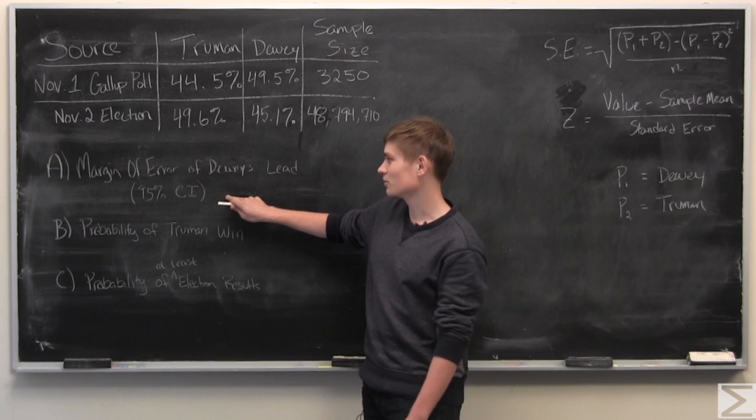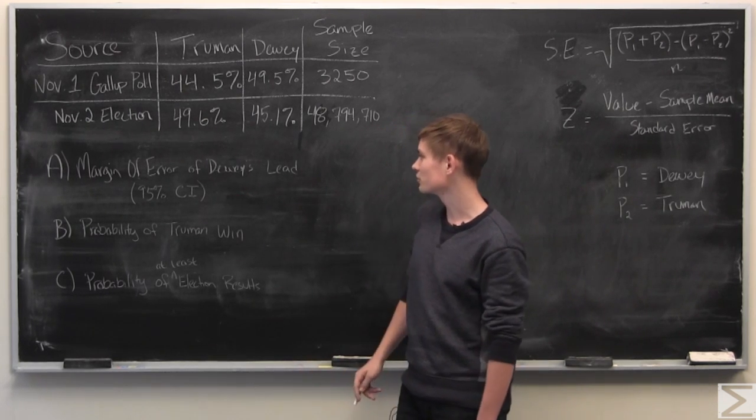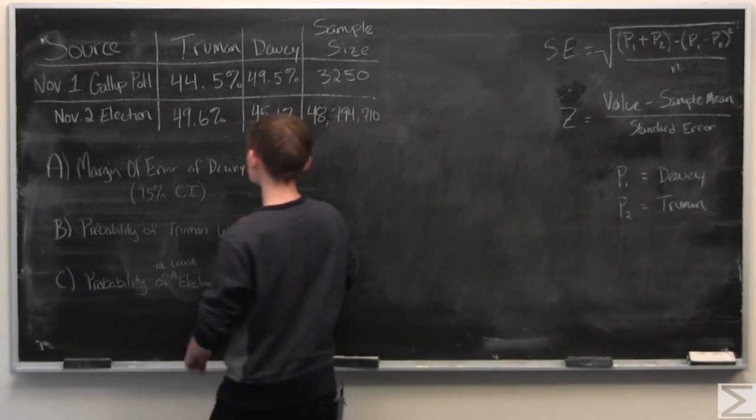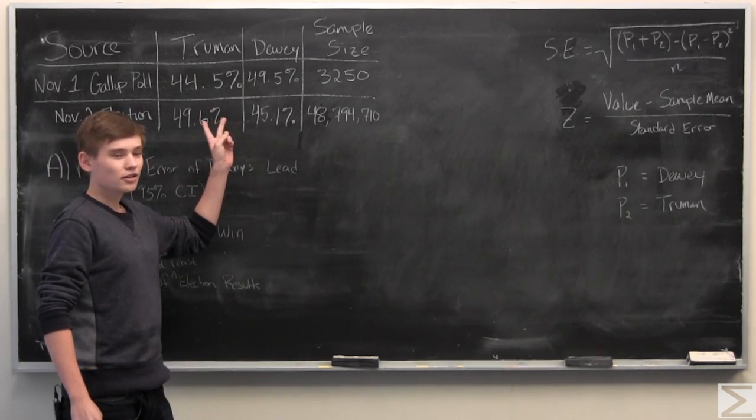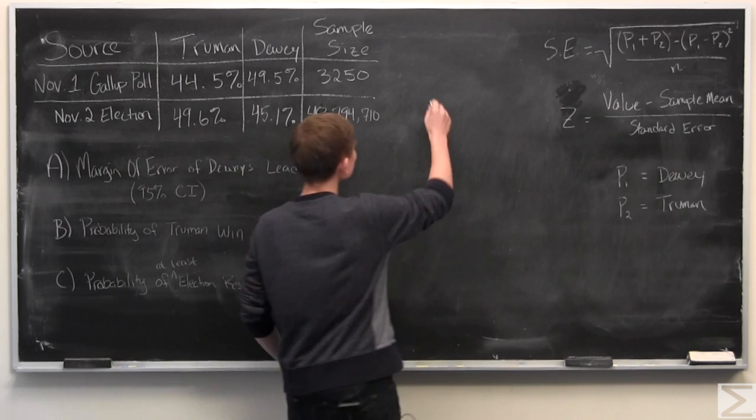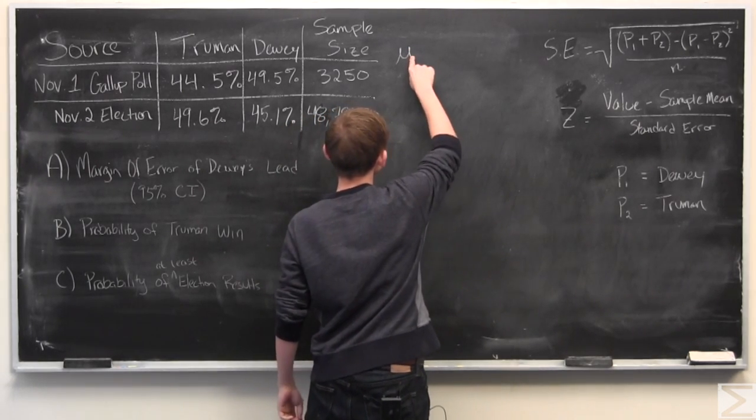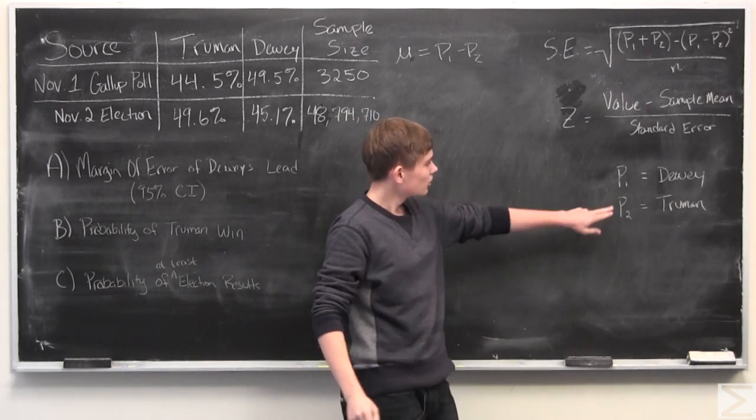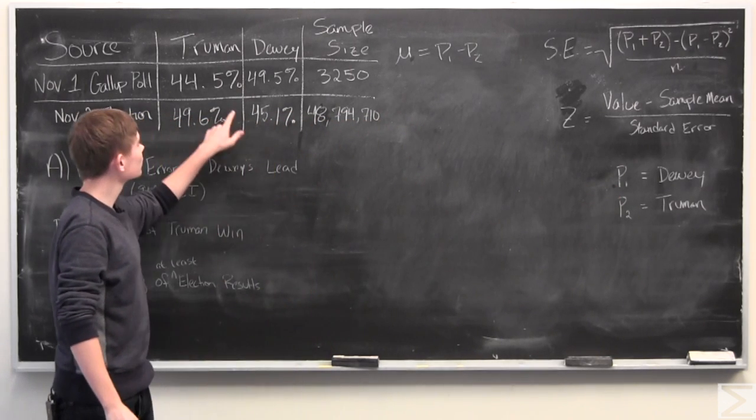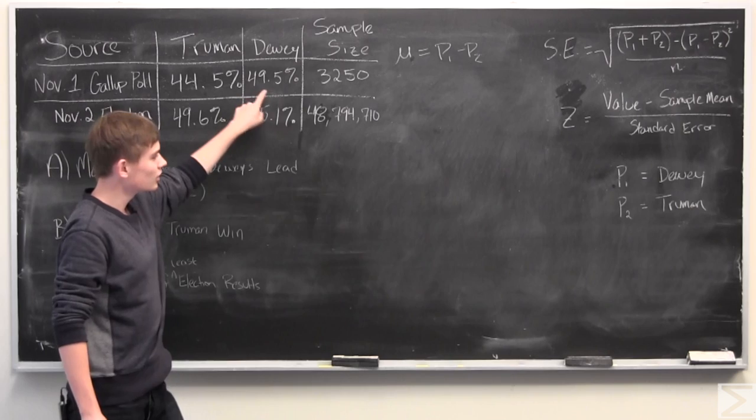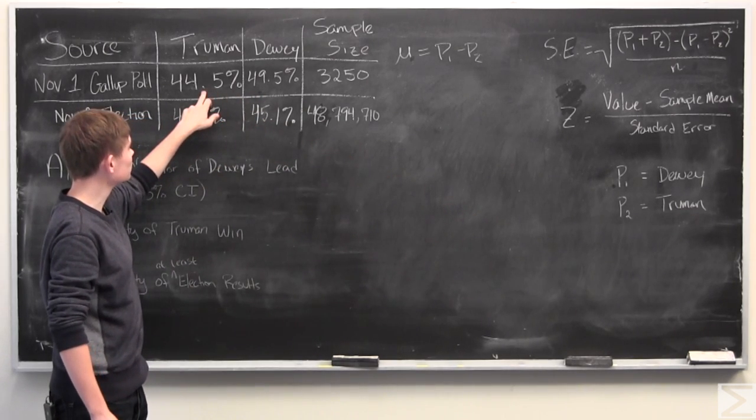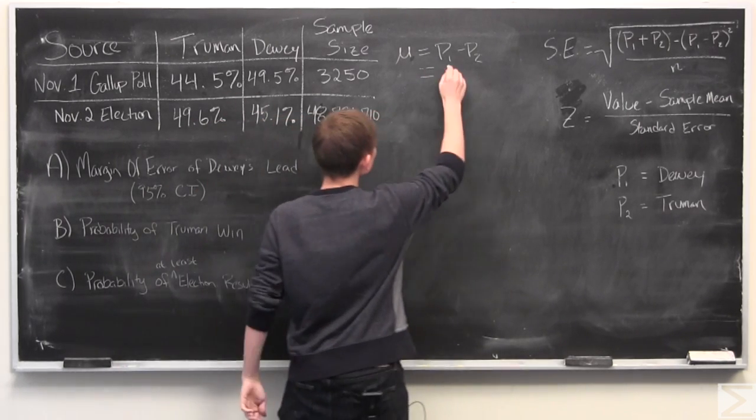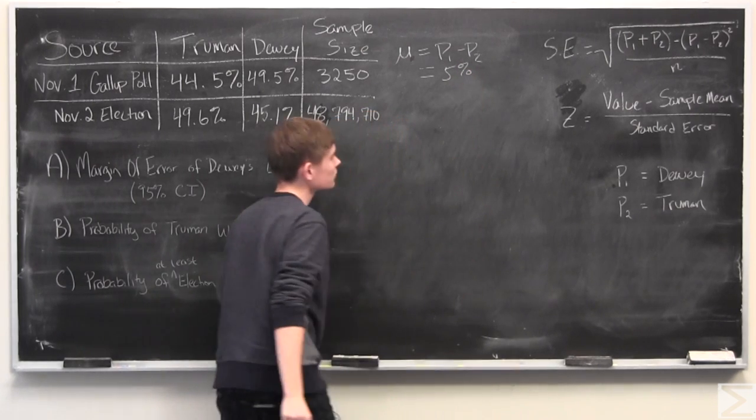Now, the first part of this problem of the week was to find the margin of error for Dewey's lead in the polls. And to find this, we are going to look at the difference of proportions. So we are going to have the sample mean for this data equal to the difference between the two, where P1 is the proportion of voters who wanted to vote for Dewey, and P2 is the proportion of voters who wanted to vote for Truman. And this is equal to 5%.